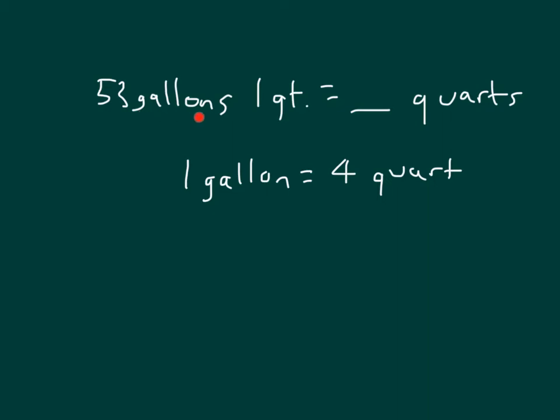Each of these gallons is worth 4 quarts. So what we do again, as a review, is that we take 53 and we multiply it by its conversion factor of 4. 4 times 3 is 12, regroup of 1. 4 times 5 is 20, plus 1 is 21. So these 53 gallons do equal 212 quarts. And then we still have one more quart that we add back in. So we have 212 plus 1 does equal 213 quarts.